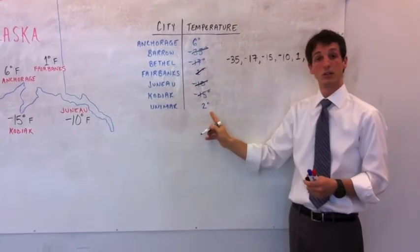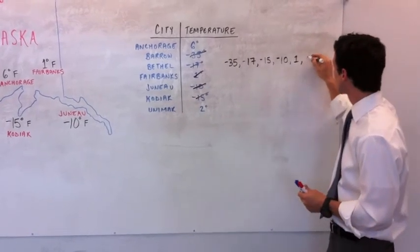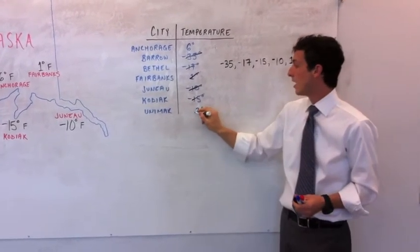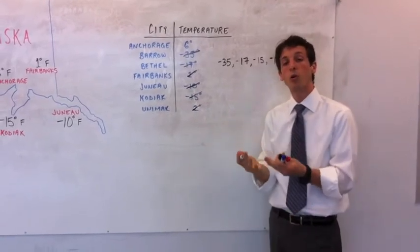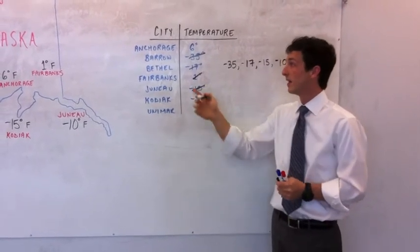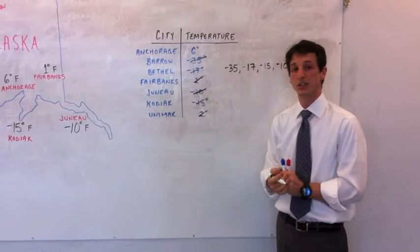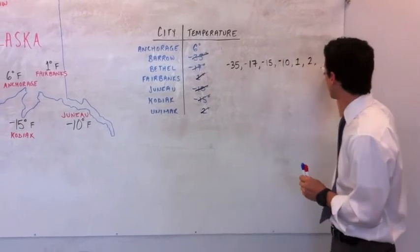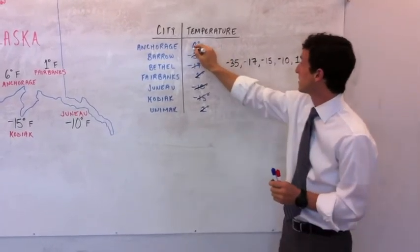Unamak, two degrees. And finally, our warmest temperature in Alaska is in Anchorage, six degrees. Cross that off the list.